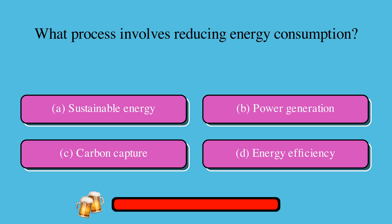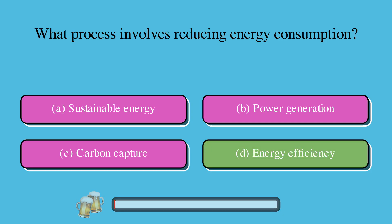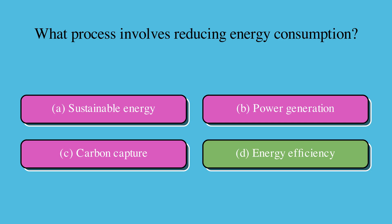What process involves reducing energy consumption? A. Sustainable energy, B. Power generation, C. Carbon capture, or D. Energy efficiency? The correct answer is D. Energy efficiency.